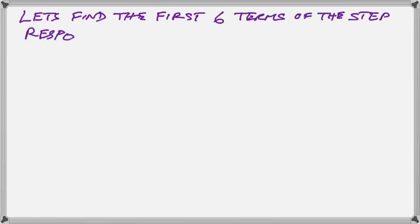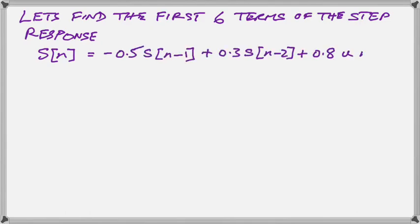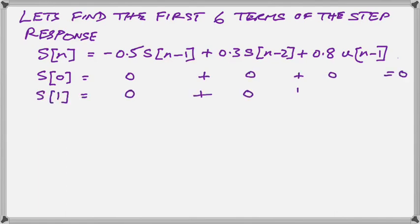Now having determined our step response equation, we are going to find six values of our step response list. Remember, all these things are lists. X is a list. Y is a list. S is a list. And H is a list.